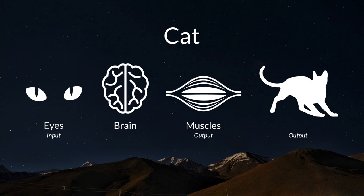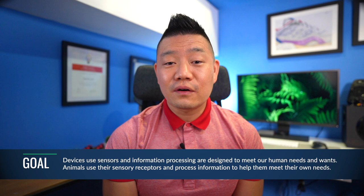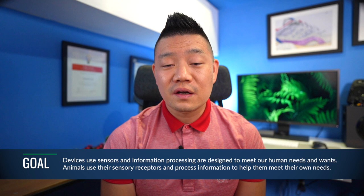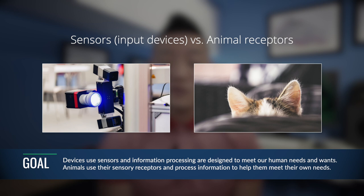We then had a class discussion on the similarities and differences between the three examples. The goal was to have students see that devices involving the use of sensors and information processing are designed to meet human needs and wants — very similar to how animals use their sensory receptors and process information to help meet their own needs, specifically for survival, growth, behavior, and reproduction. With this connection, I wanted students to brainstorm opportunities for biomimicry in regards to nature's use of sensory receptors and information processing.